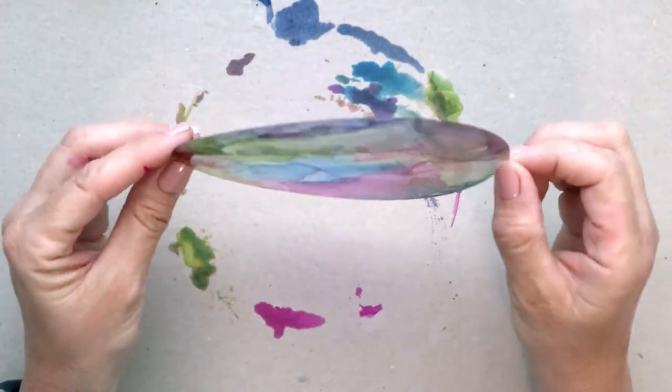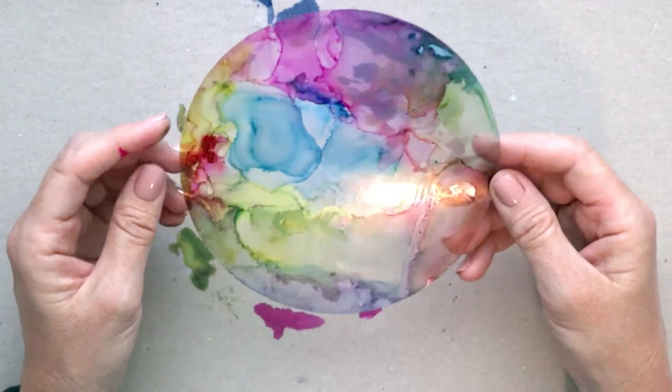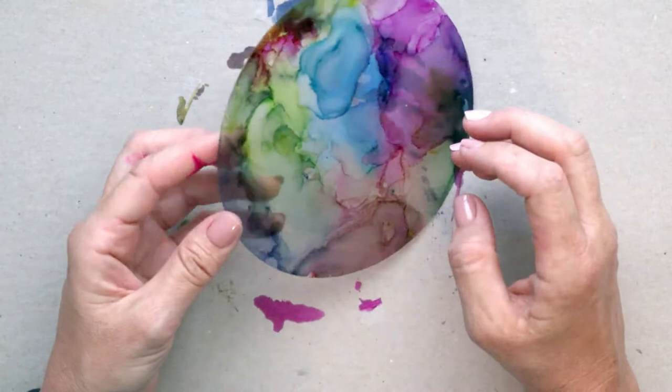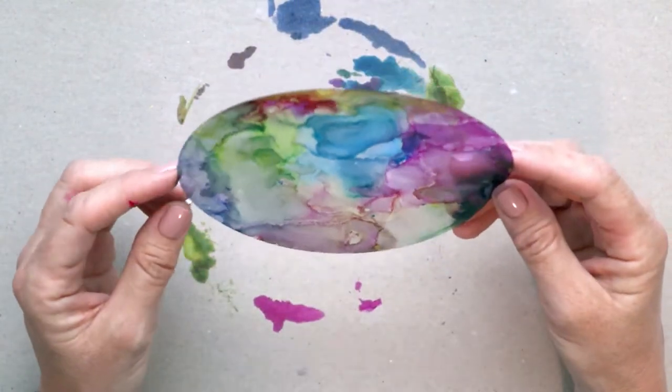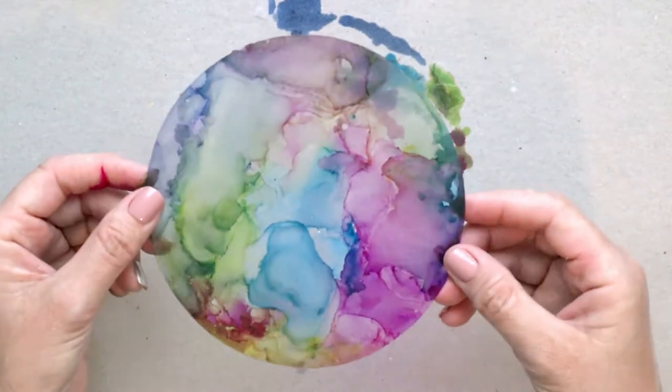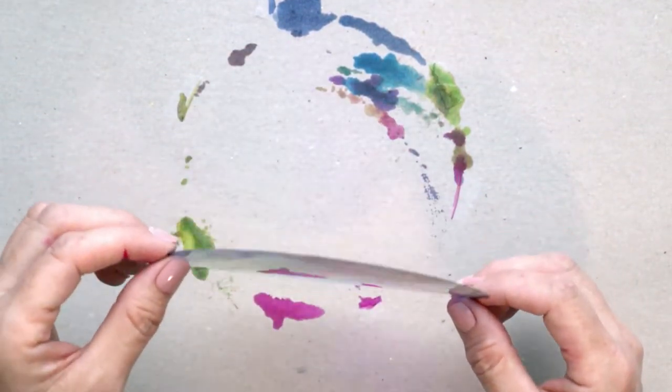Once you think you have this the way you like it, what I would recommend is holding it up to a window just so you can see if there are any spots that don't look quite right. And then you can keep working those. So I will check and see how this looks as you're holding it up to the window.